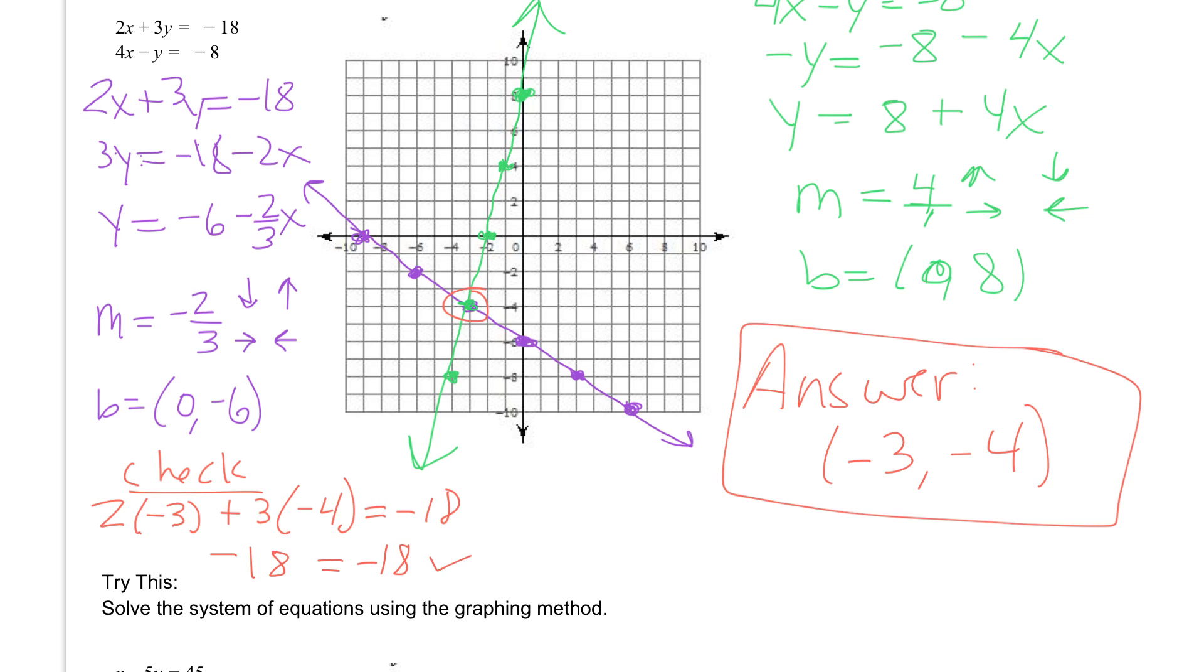And then we have to check the other one. It does not work if you only check one. You must check both. So now we'll check the bottom one. So if we check the bottom one, we would have 4 times negative 3 minus a negative 4, and we want to know if that's equal to negative 8.